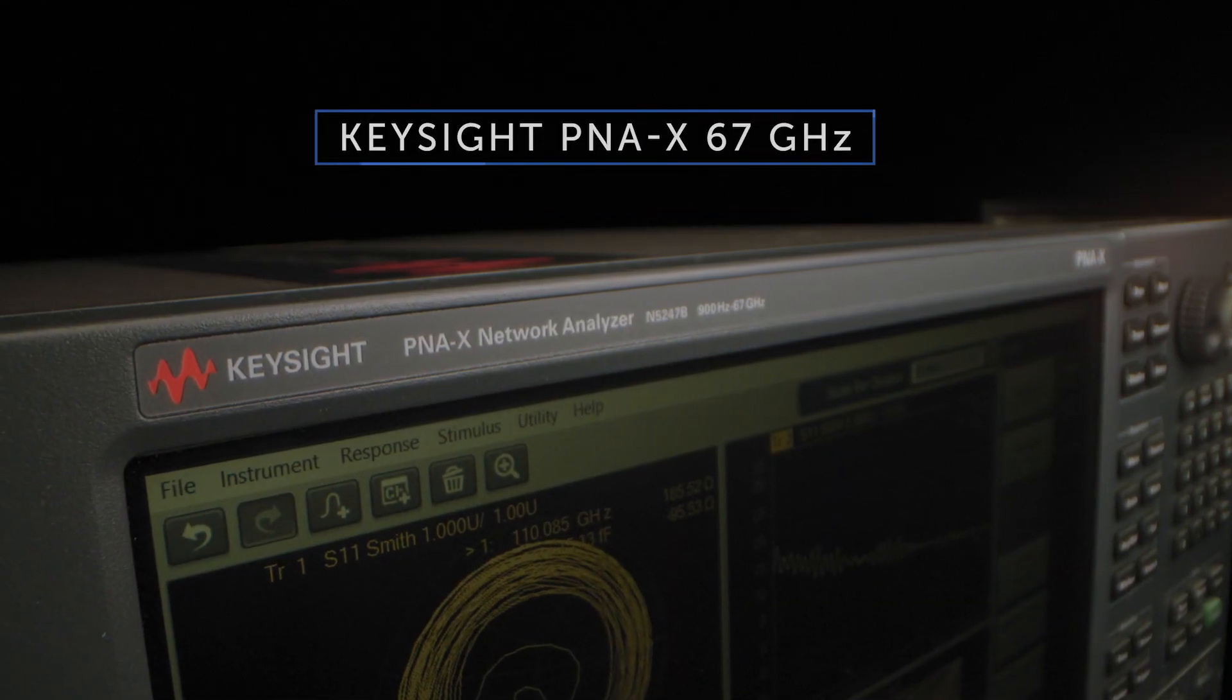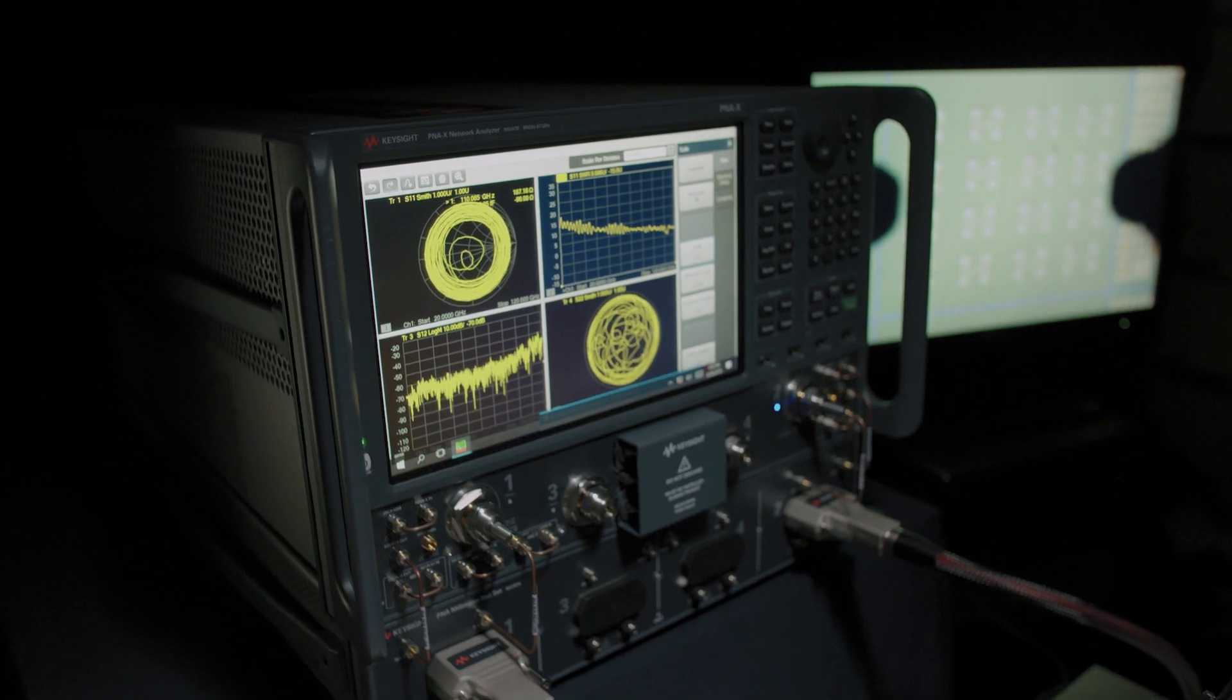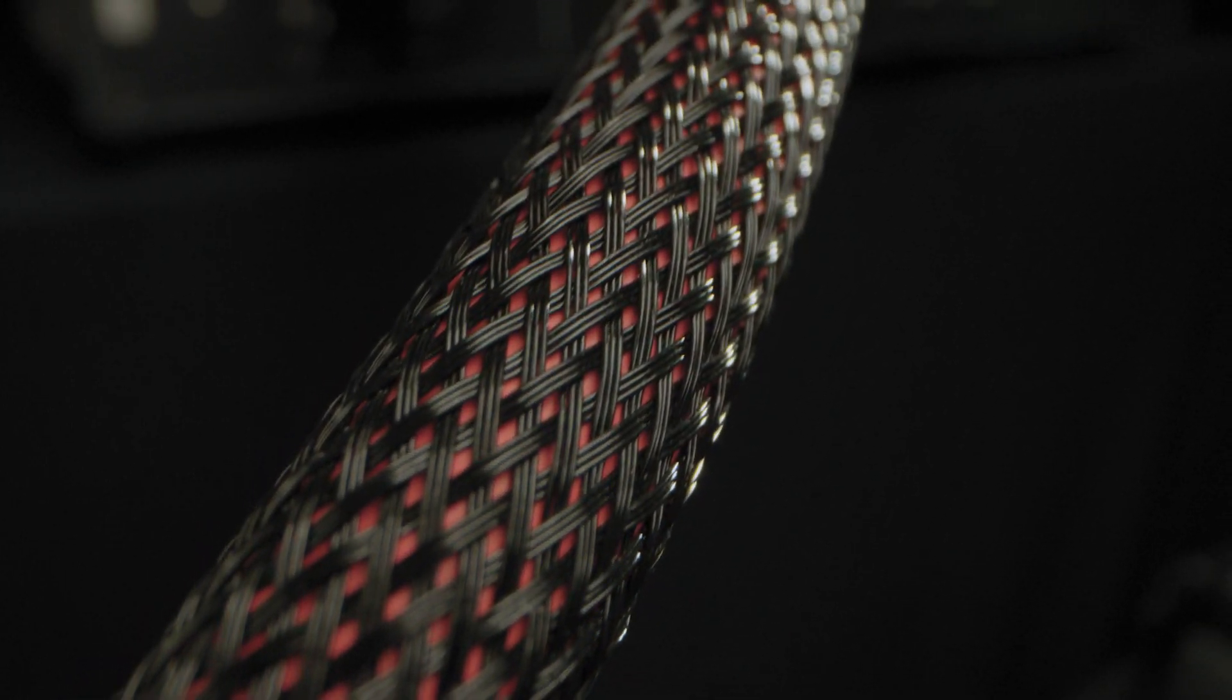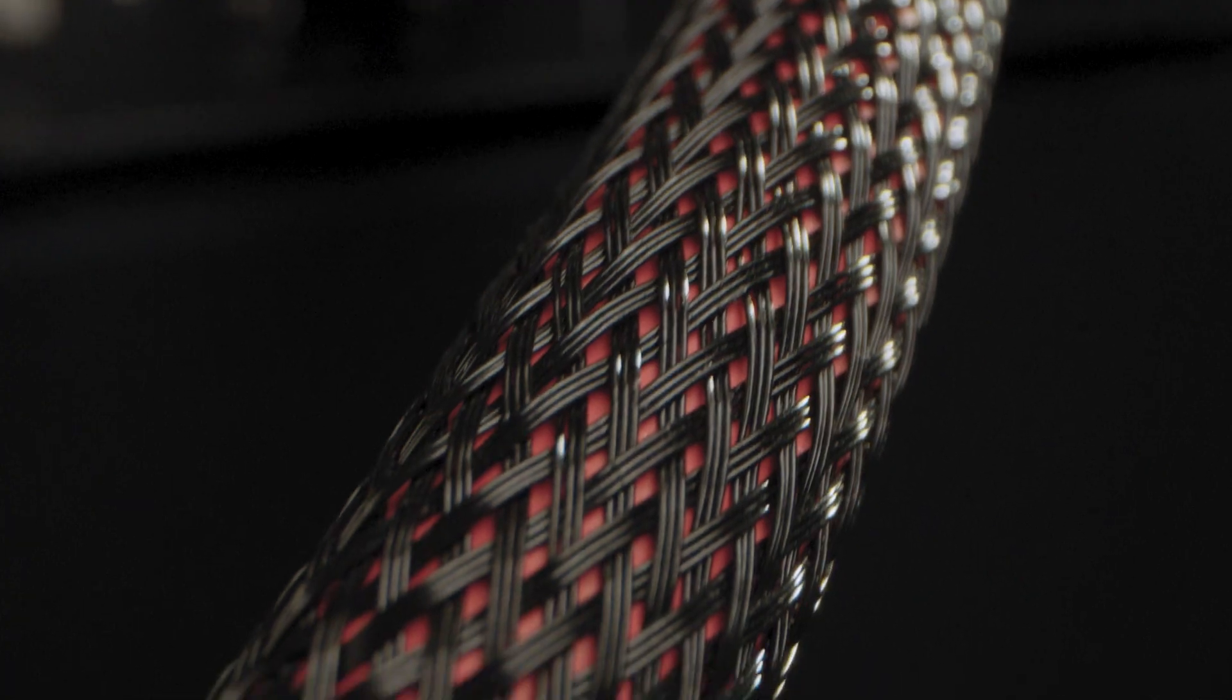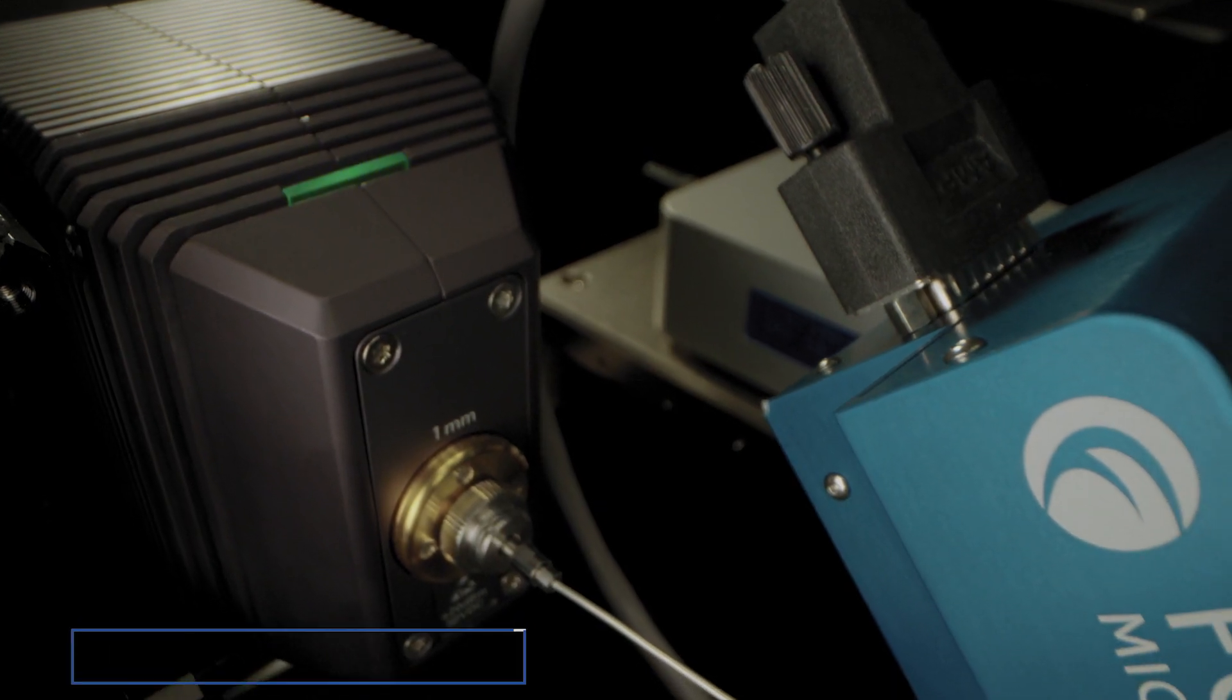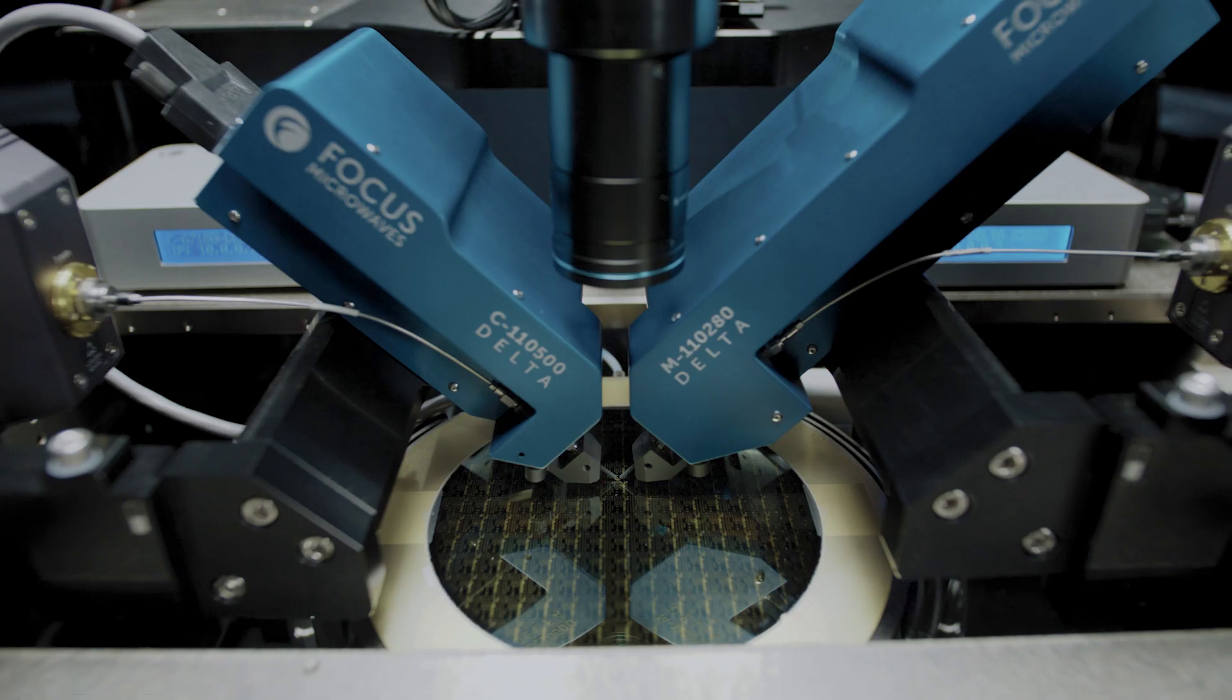The new Keysight N5290A PNA-X produces metrology-grade results that enable leading-edge developers to confidently characterize their millimeter wave designs. The broadband millimeter wave VNA provides stable, accurate network analysis from 900 Hz to 120 GHz. The new frequency extension modules are compact, lightweight external heads designed to interface with the test set.